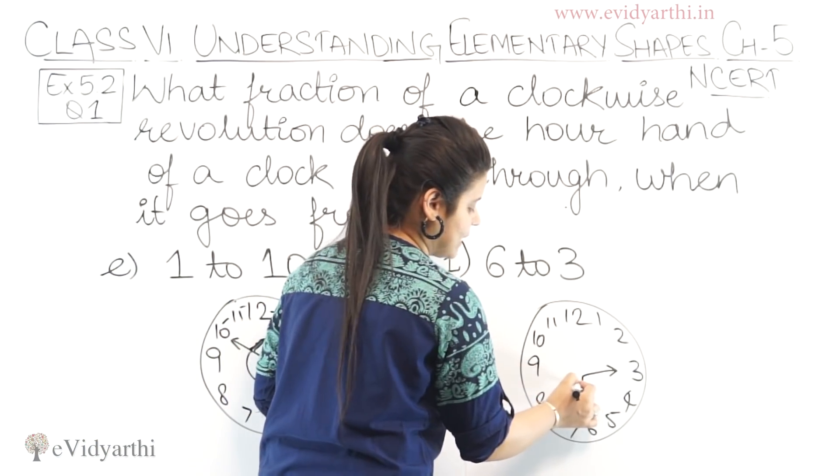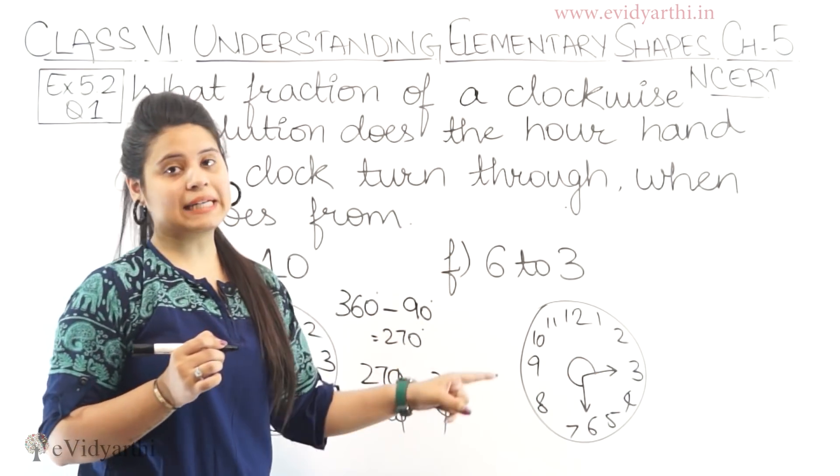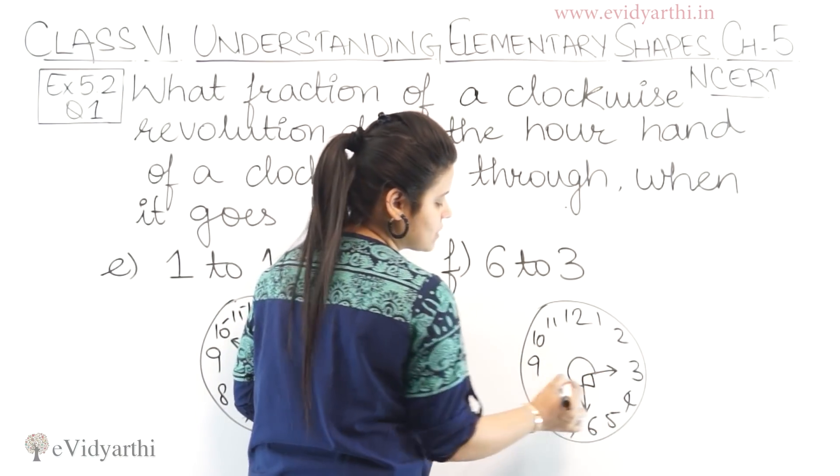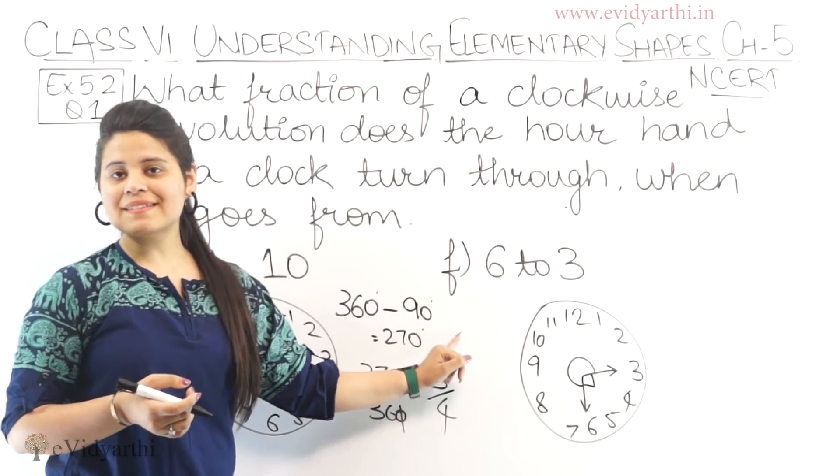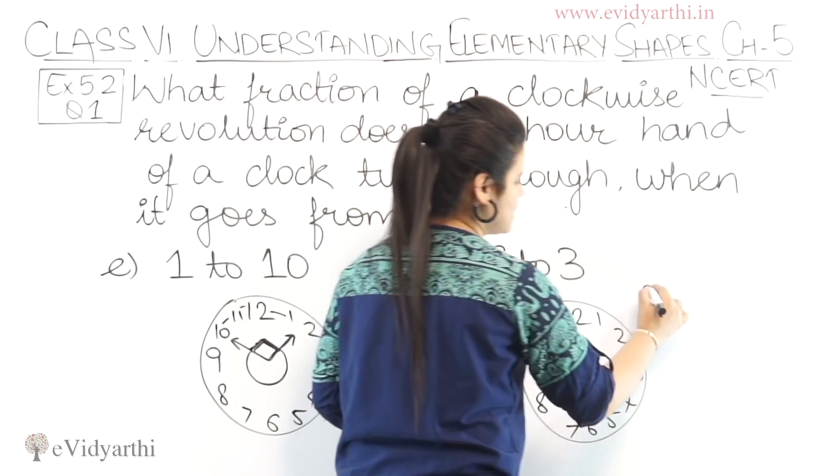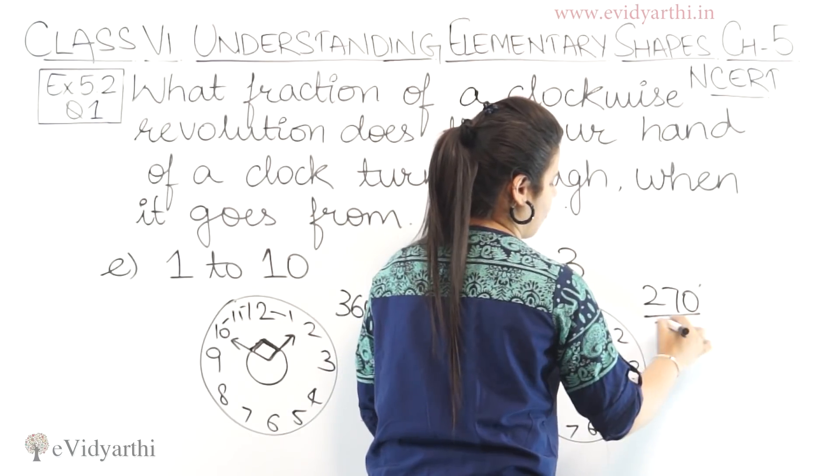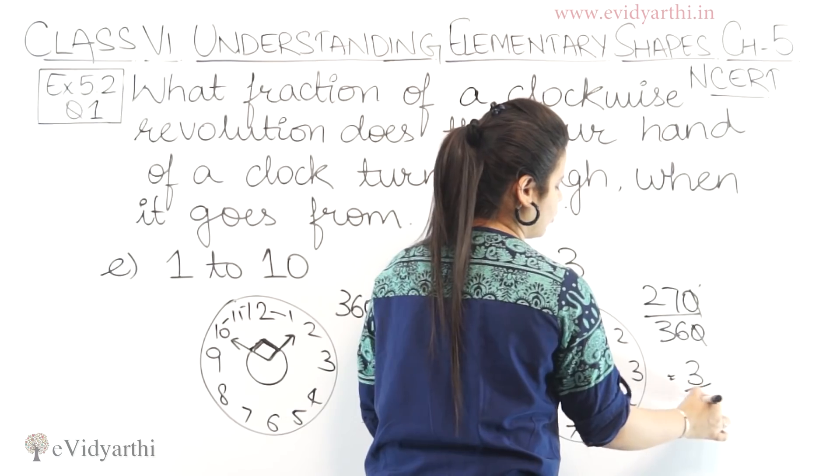And, three to six is of course a ninety degree angle. So, this again becomes 360 minus 90, that is 270 degree. Means, 270 degree upon 360. Zero se zero cancel. We get three upon four.